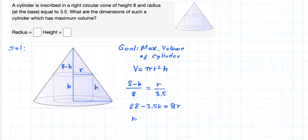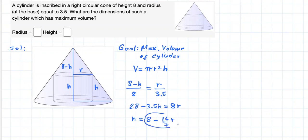Solving for h, we get h equals 8 minus (16/7) times r. Now that I have h in terms of r, I am going to substitute this into my objective function.